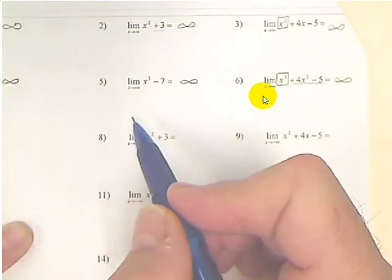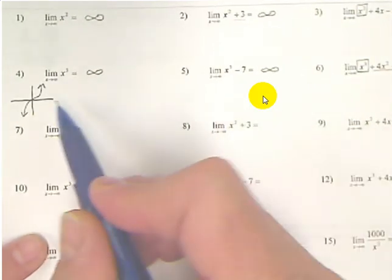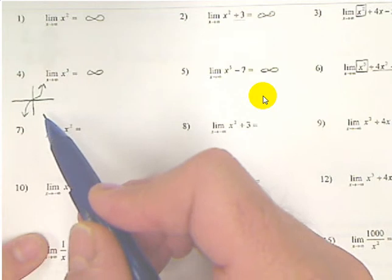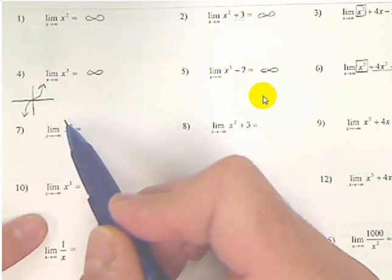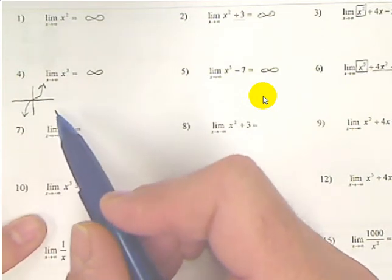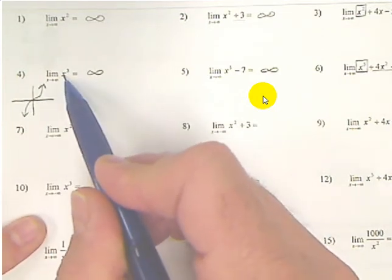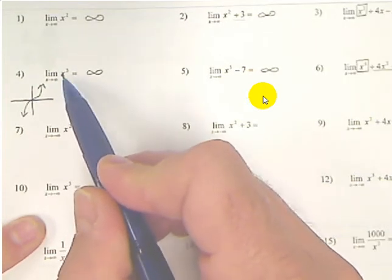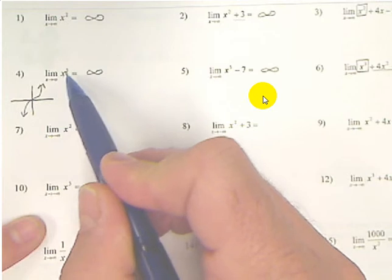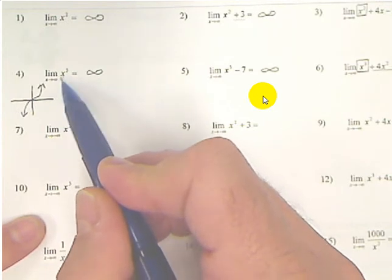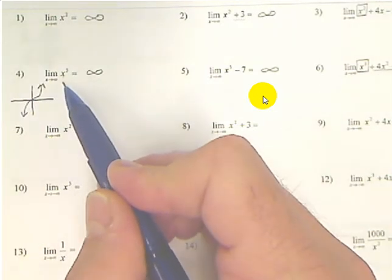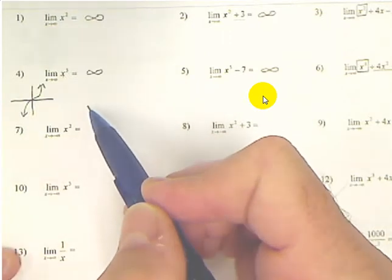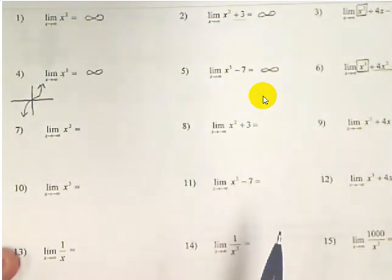Eventually we're going to get to equations where we don't know the shapes. One method, besides using our calculator to look at the graph — which can be time-consuming — is to plug in large numbers for x. We're supposed to plug in infinity, so if you were to plug in 1,000 or 10,000 or 1,000,000 and calculate where that answer is getting closer to, you can predict that it's headed up forever or somewhere else. I'm going to start doing that here pretty soon.